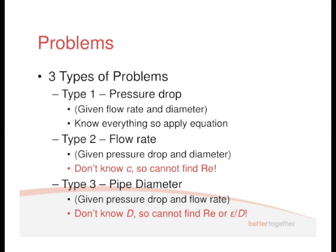All the problems in your tutorial sheet and the exercises will be one of these types. There's a method to go through to solve them. Type 1 is very simple — it's just determining the pressure drop using our equation. We're generally given the flow rate and the diameter. If you've got flow rate V̇ and the diameter, you can work out velocity C, since V̇ = AC. Don't forget that — we covered that in the second lecture.